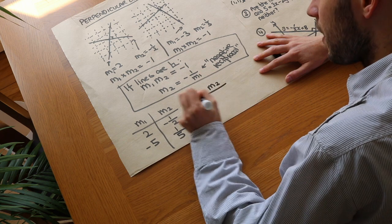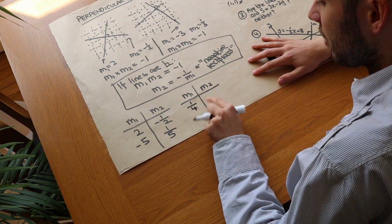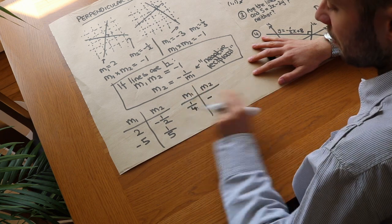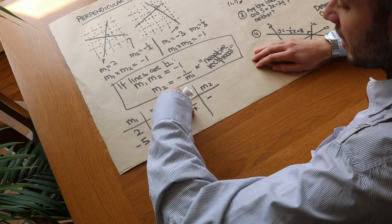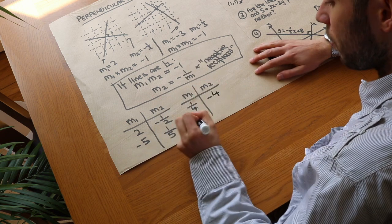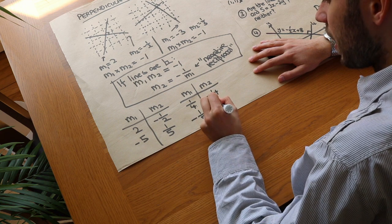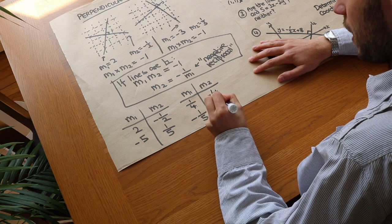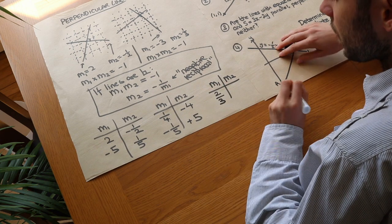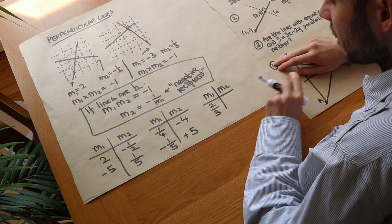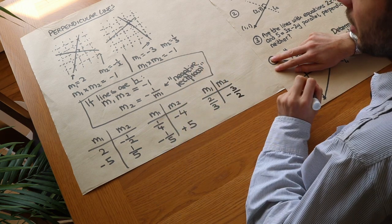A few more examples. If we had a quarter, we do the negative reciprocal: negate it so it becomes negative, and the reciprocal of a quarter is 4 — because reciprocal of a fraction flips it upside down, so it becomes 4 over 1, which is just 4. What about minus a fifth? We negate it so it becomes positive, and we reciprocate a fifth to get 5 over 1, which is just 5. Finally, if we had 2 thirds, we find the negative reciprocal: negate it to get minus, then flip the fraction to get minus 3 over 2.